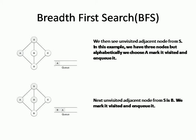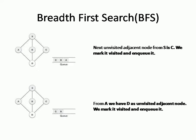Then we find the next unvisited adjacent node from s, which is b. We mark b as visited and according to the rule we add it to the queue. The queue now contains two nodes: a and b. After node b, we check for the next unvisited adjacent node from s, which is c. We mark vertex c as visited and add c to the queue. The queue now contains three vertices: a, b, and c, as shown in the figure.